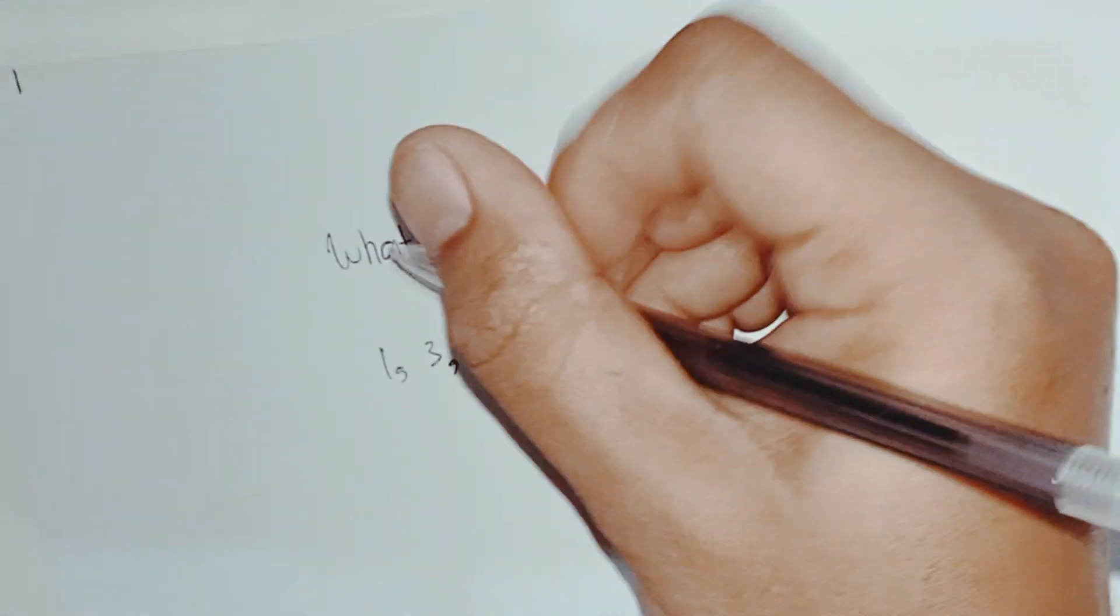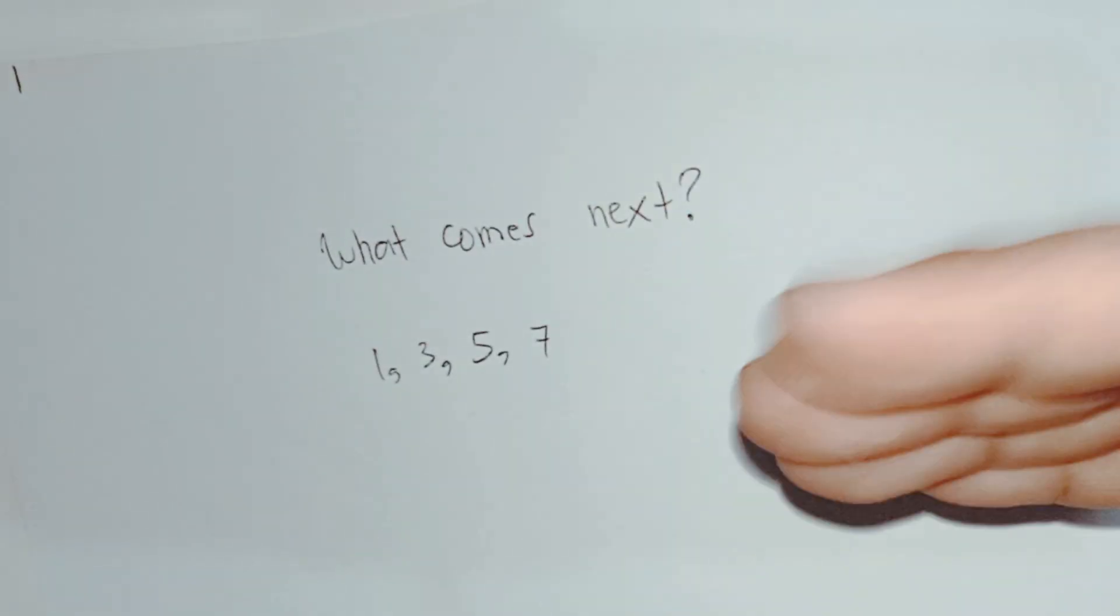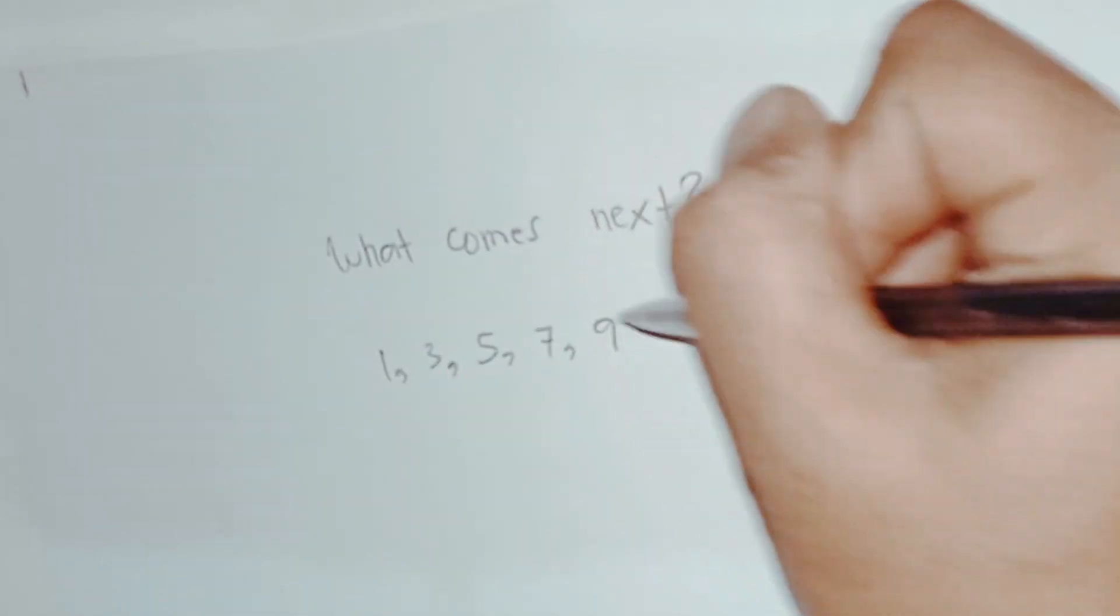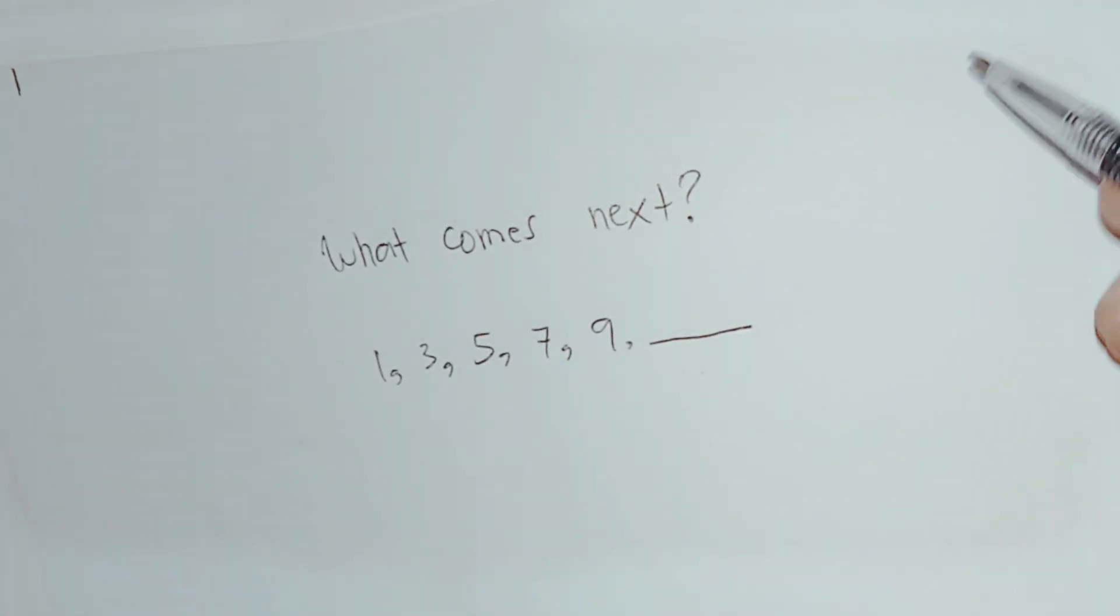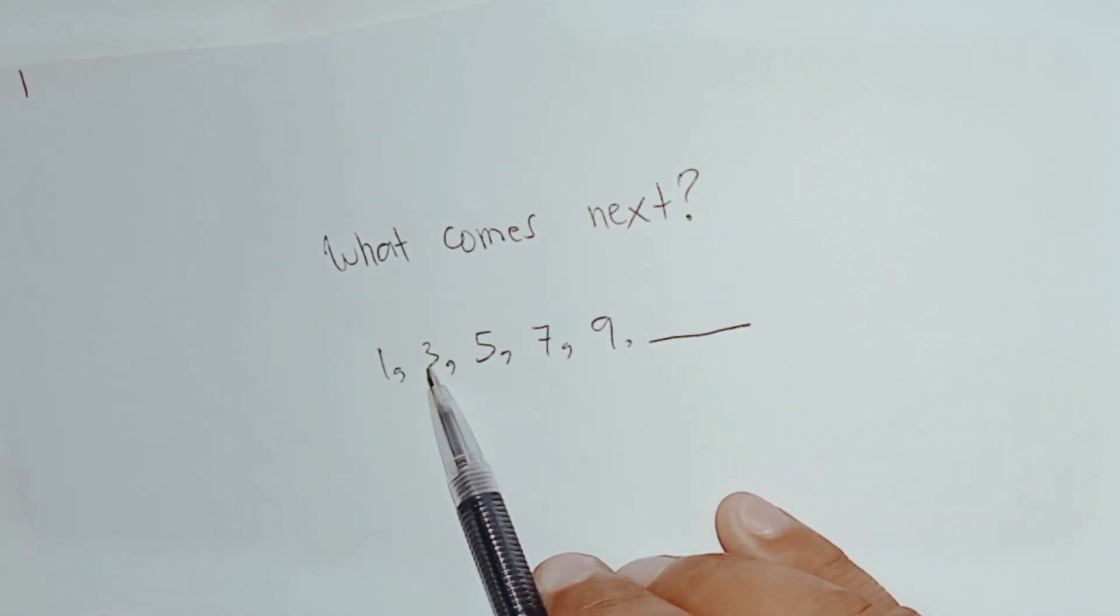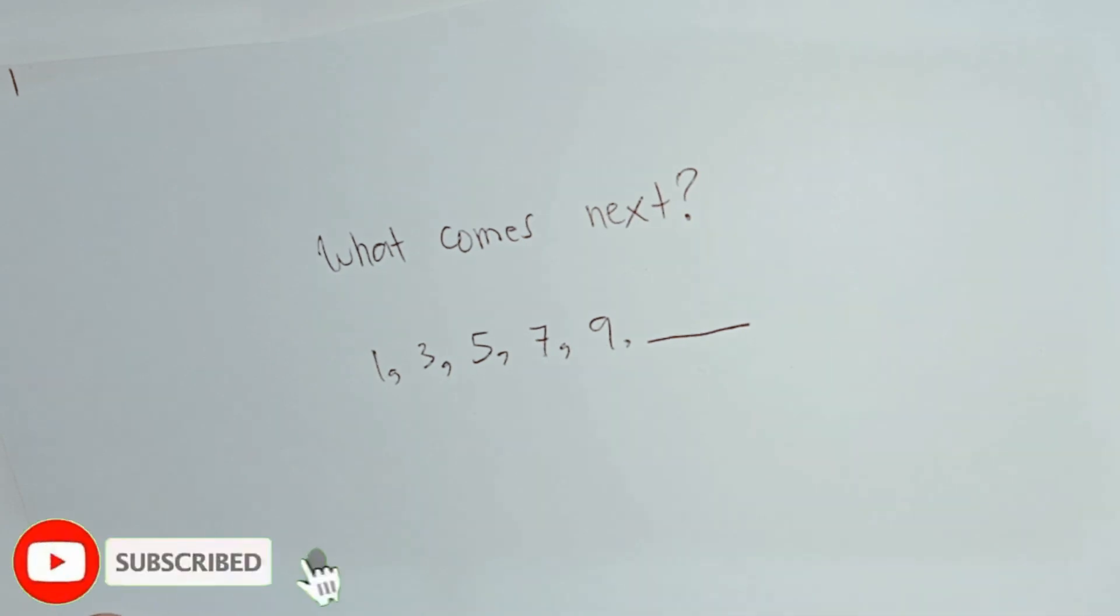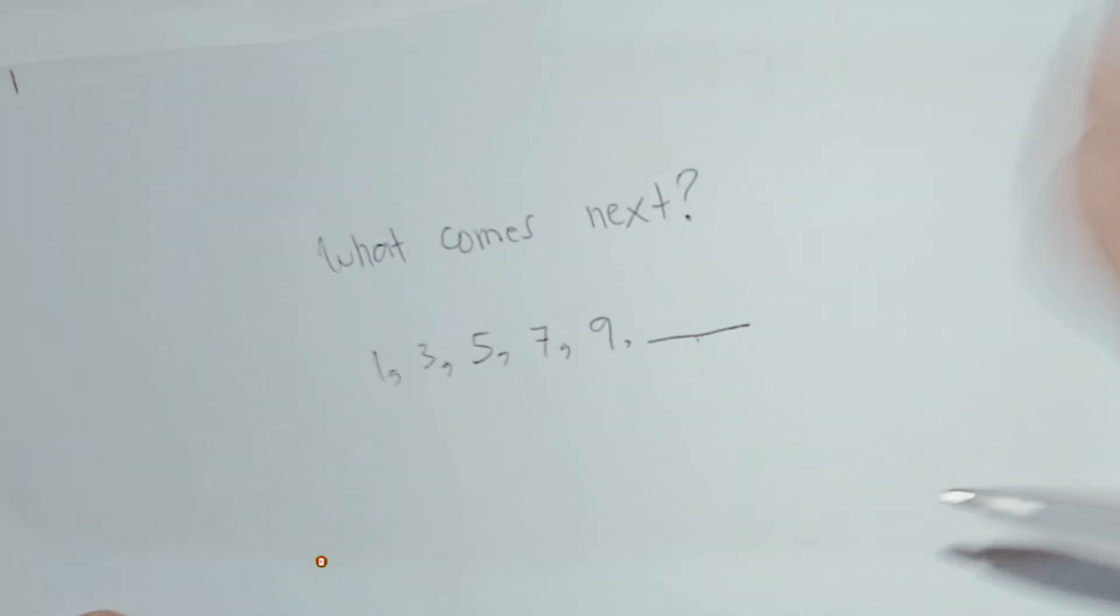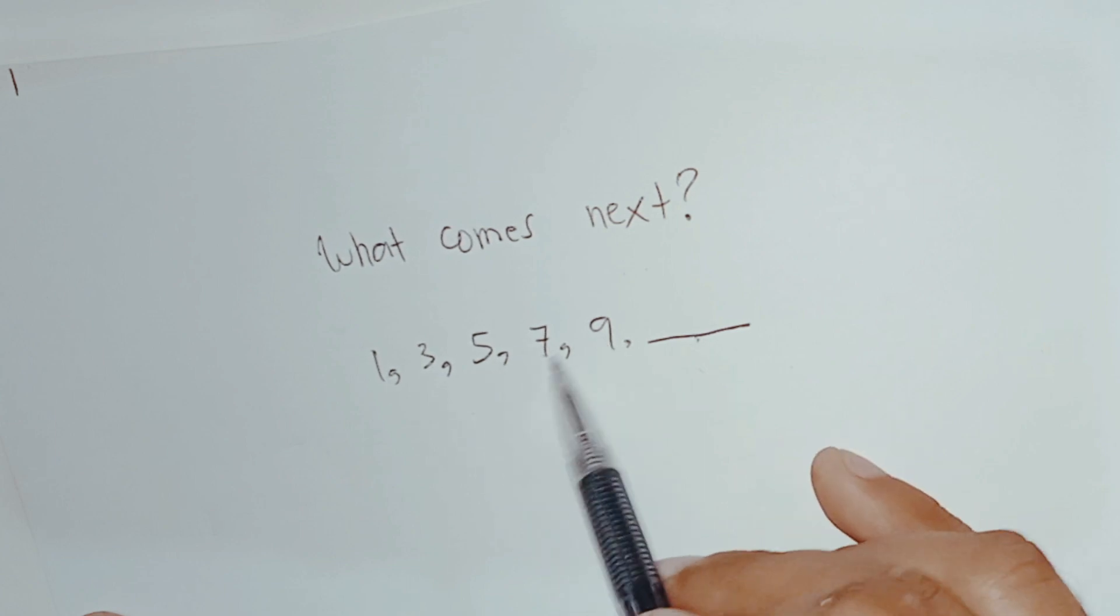We need to find the common difference or the flow of the pattern or sequence. So let's try to figure out what comes next to nine. Bear in mind that we have here the sequence 1, 3, 5, 7, 9 and a blank. We will fill in this blank by finding first the pattern here.